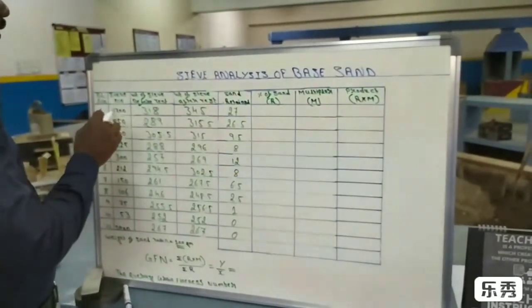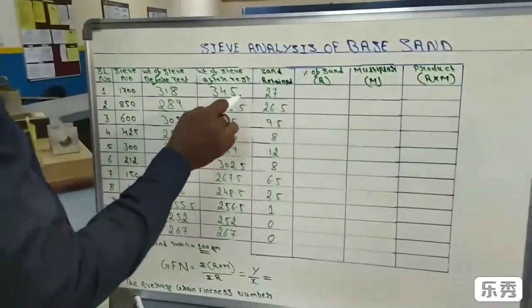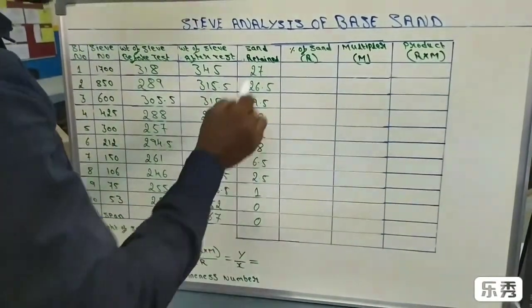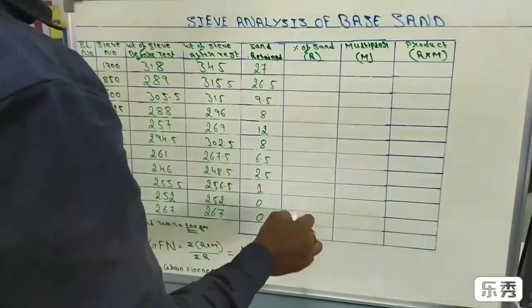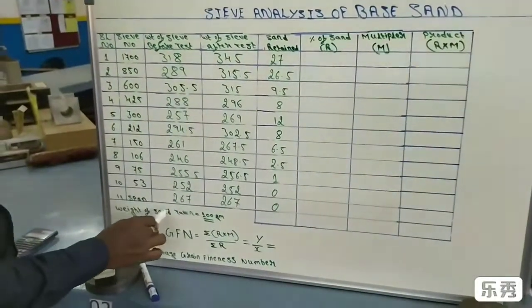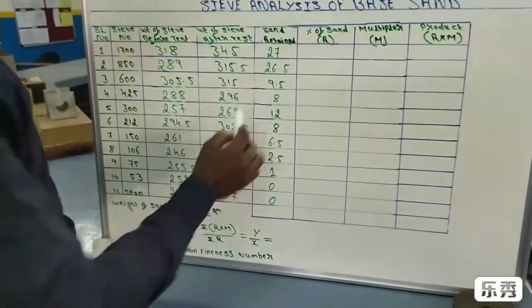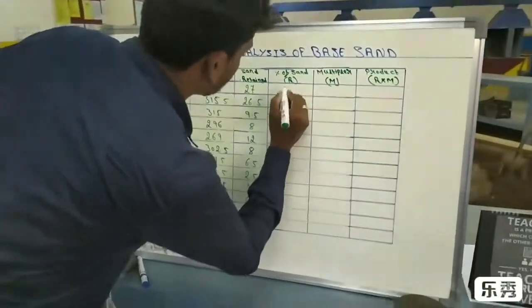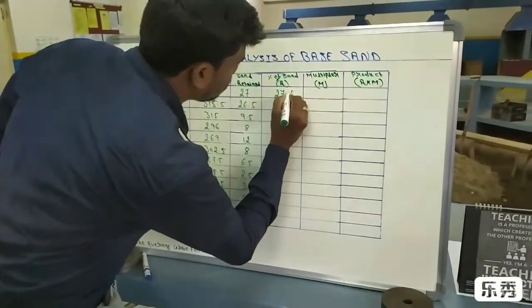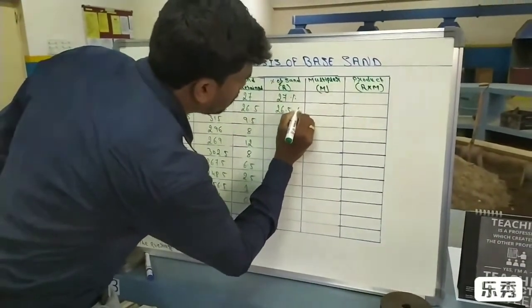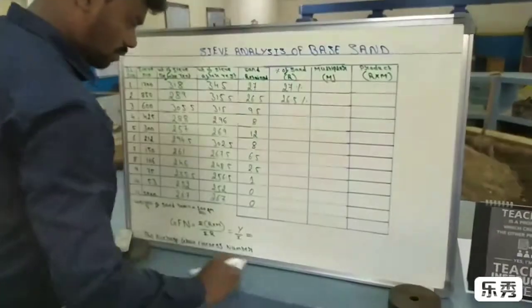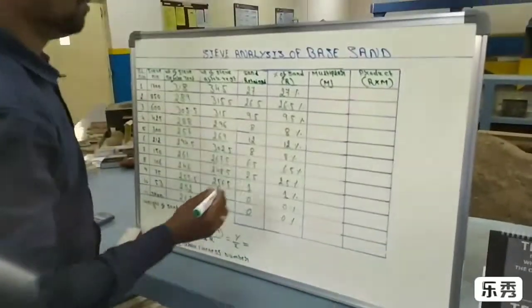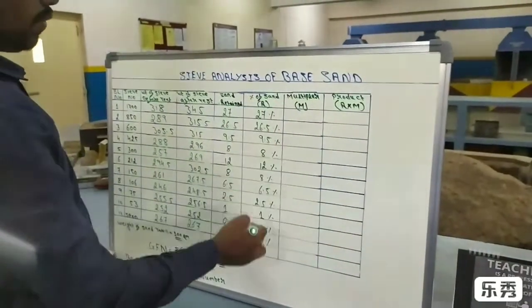As for the sieve at 1700 microns, the sand return is 27 grams. Now we calculate the percentage of sand. Since we took 100 grams of sand, whatever the sand return in grams equals directly the percentage. So the first sieve is 27%, the second is 26.5%, and some sieves show 0%.